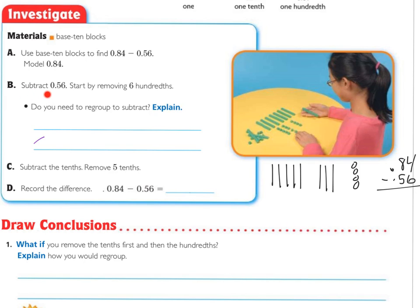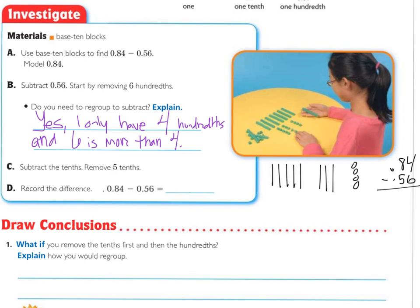The next step is to subtract 56 hundredths, and we start on the right by removing six hundredths. We need to think: do we need to regroup so we can subtract? I only have four hundredths, so am I able to take six away from just those four? No, I am not. That means I do need to regroup, because I can't take six hundredths away from only four. I need to break up a tenth. I only have four hundredths, and six is more than four — that's why I need to regroup.